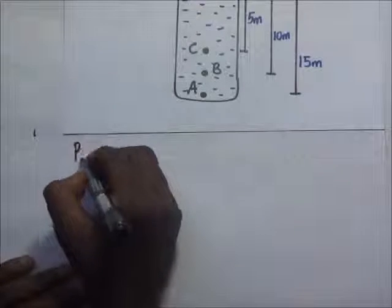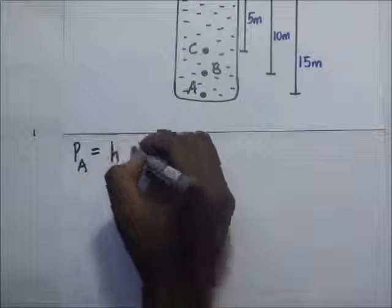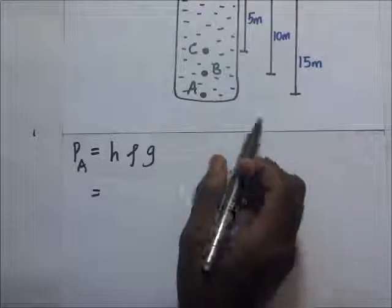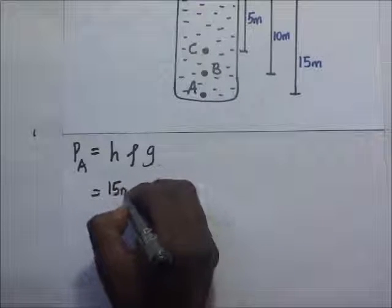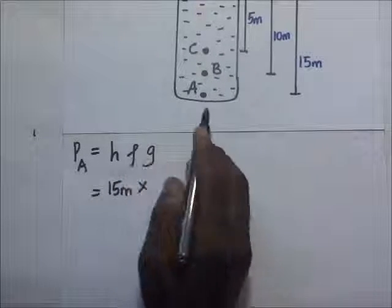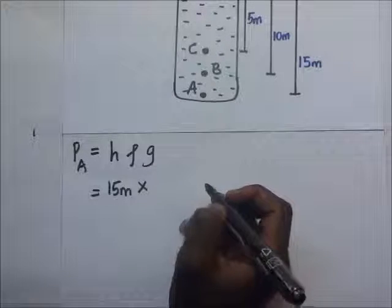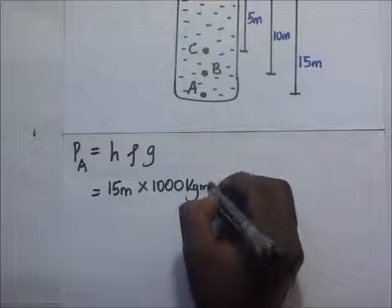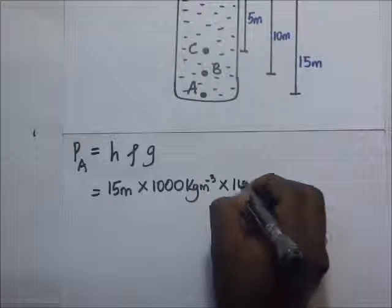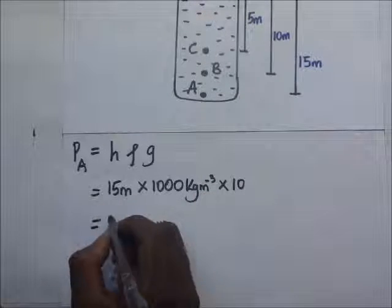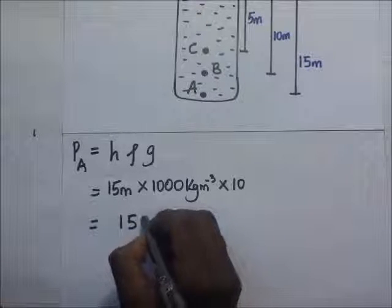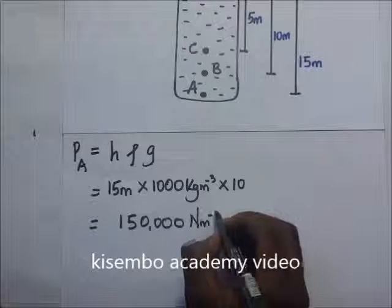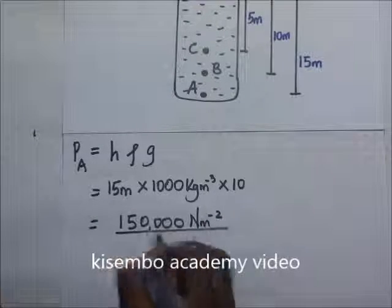Now the pressure at point A is going to be equal to height times density times gravity. Now the height at point A is 15 meters. So let's multiply that by the density of water, which is 1000 kilograms per meter cubed. It is a constant, so it's 1000 kg/m³. Multiply that by gravity. Our gravity is also a constant, which is 10. And so the answer here is 150,000 Newtons per meter squared. This is also in Pascals.